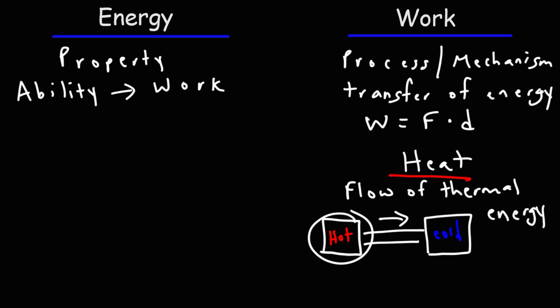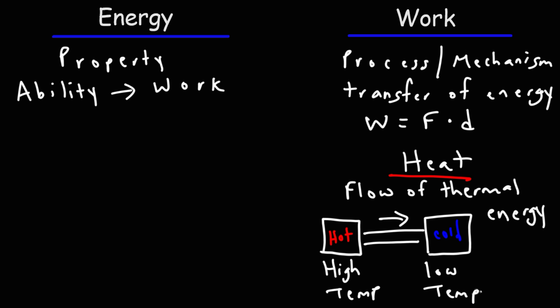So the hot object has a lot of thermal energy; the cold one doesn't have much. Temperature really is an indication of how much thermal energy an object has. A high temperature indicates a lot of thermal energy; a low temperature indicates less thermal energy. Of course, the amount of matter is a factor as well, but simply put: the higher the temperature, the more thermal energy the object has.